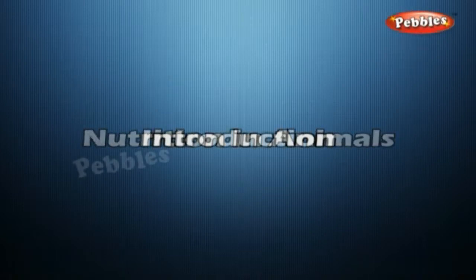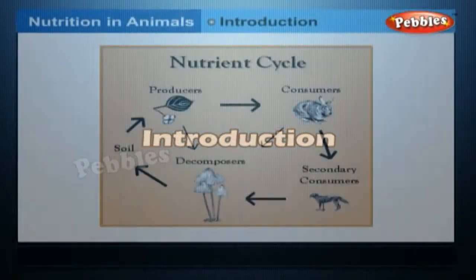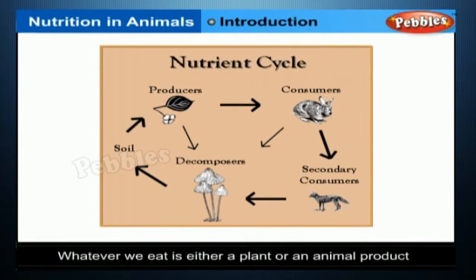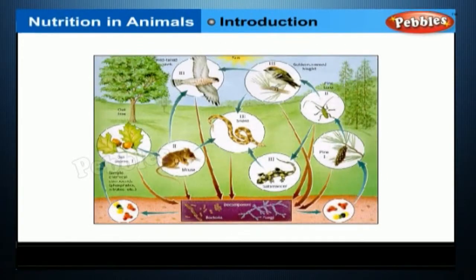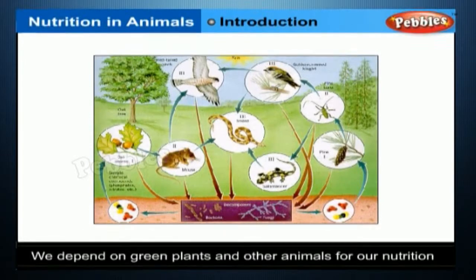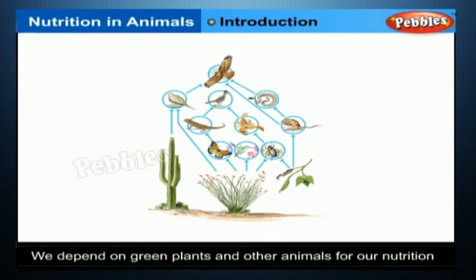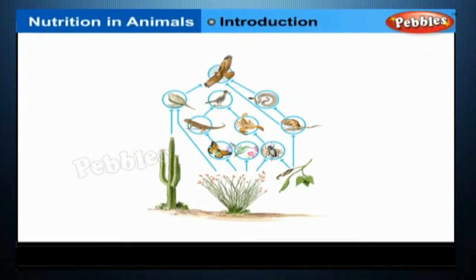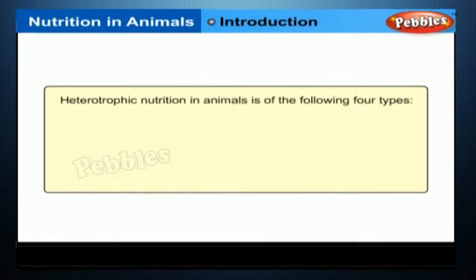Nutrition in Animals. Whatever we or animals eat is either a plant or an animal product. Since we cannot photosynthesize because we lack the green pigment chlorophyll, we have to depend on green plants and other animals for our nutrition. So our mode of nutrition, and that of other animals and some plants, is heterotrophic. Heterotrophic nutrition in animals is of the following four types.